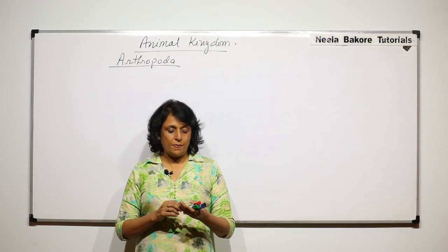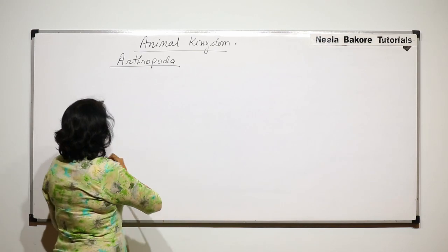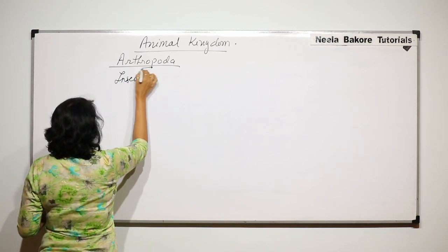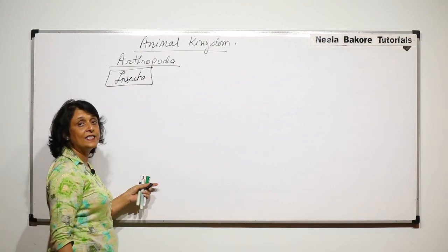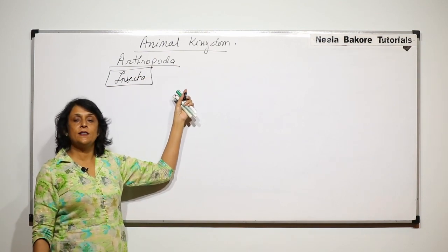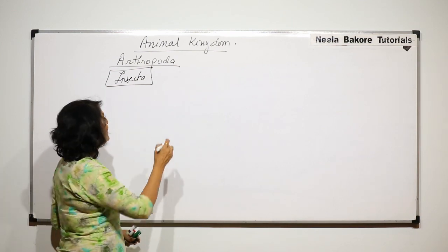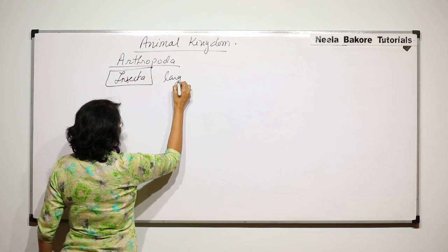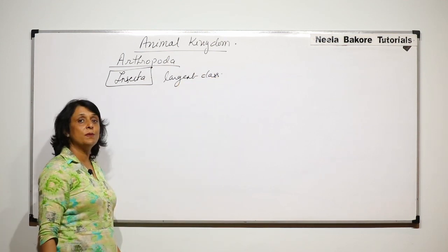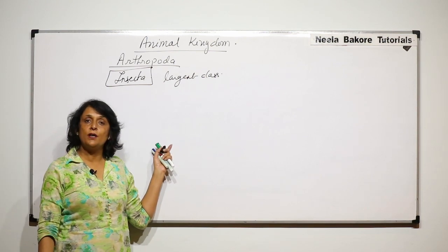In this part we will talk about another class of phylum Arthropoda, and that class is Insecta. Insecta is the largest class of this phylum. Arthropoda is the largest phylum and Insecta is the largest class, meaning there are a maximum number of species found in this particular class.